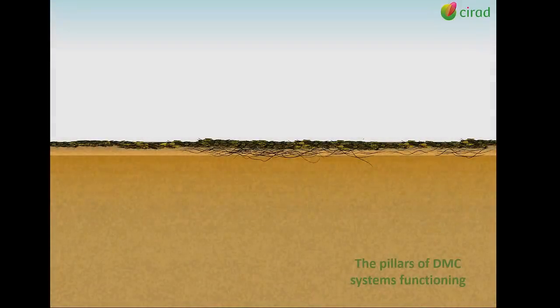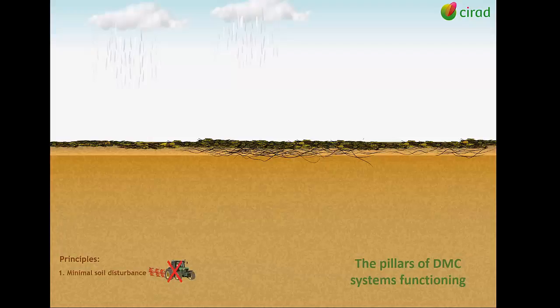DMC systems are based on three technical principles: minimal soil disturbance, permanent and total soil cover, and diversified crop rotations and associations with important biomass return to the soil. These three principles put together allow to maintain the three pillars for DMC systems ecological functioning.